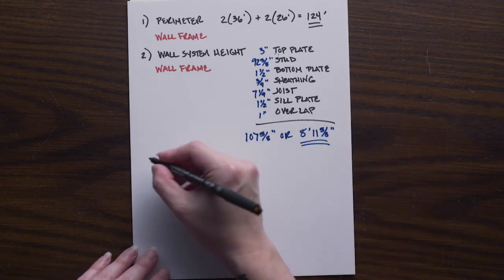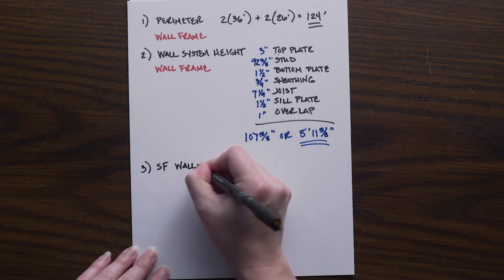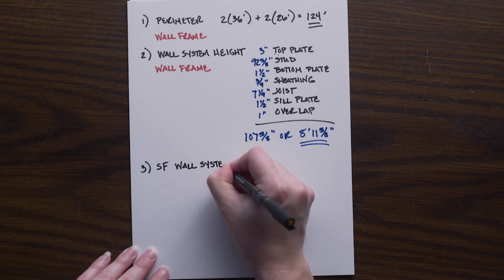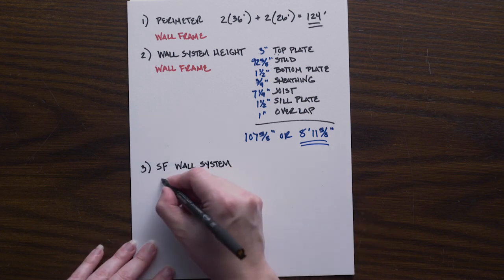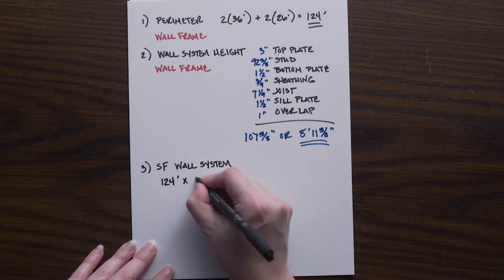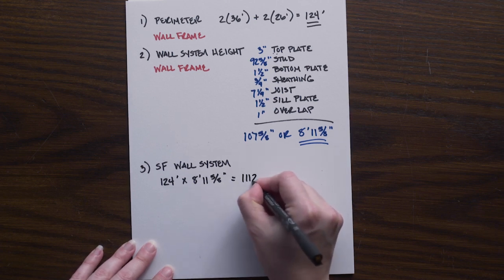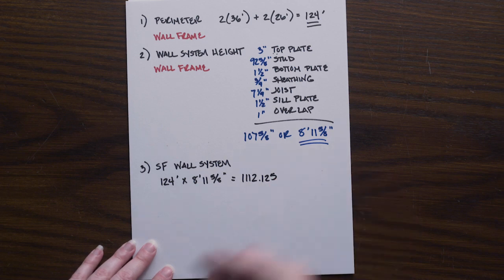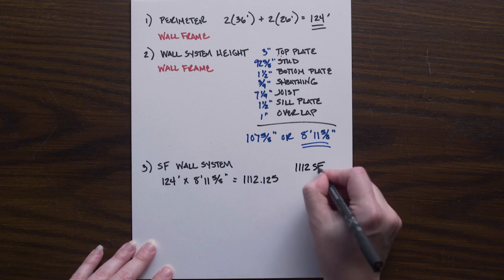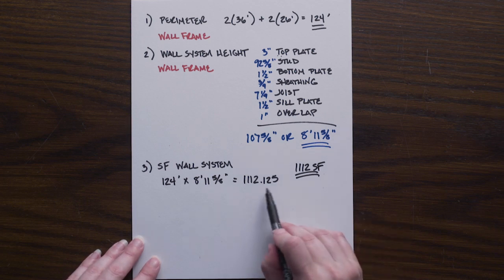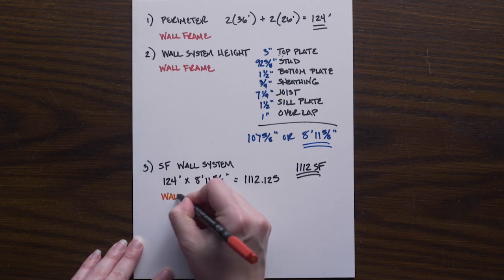With these two numbers, we can then calculate what our exterior square footage of our wall system is. And again, we will need this number when we are looking at our house wrap, as well as the other numbers for our finished materials. We simply take the 124, multiply it by the 8'11 5/8". And we come up with 1,112.125, which roughly said is either 1,112 or 1,113 square feet. Either way, it's correct. When we use this number again, we will use this unrounded number. And we first saw this again when we were doing our wall framing sample problem.